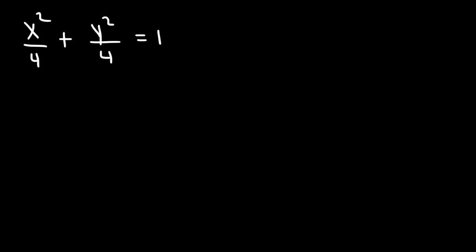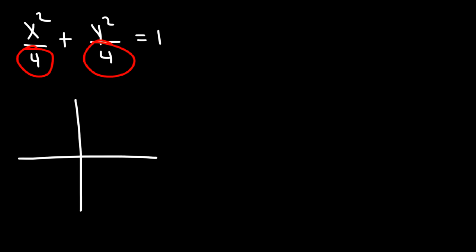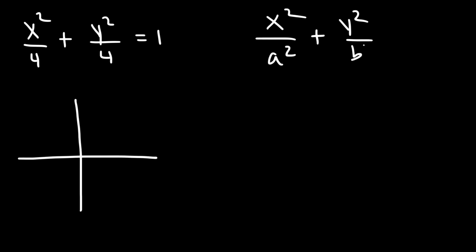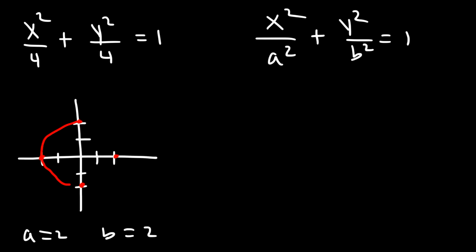Let's work on some examples. If we have the equation x²/4 + y²/4 = 1, we need to determine the eccentricity and graph it. The center is (0, 0). Calling the first term a² and the second b², we get a = 2 and b = 2. We plot 2 units right and left, and 2 units up and down. Since a and b are the same, what we have is not an ellipse but a circle.